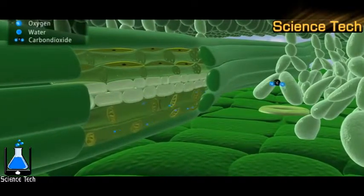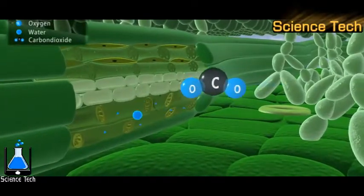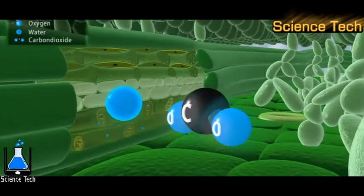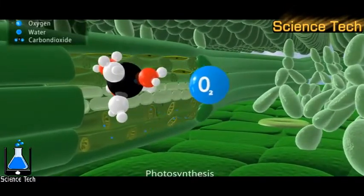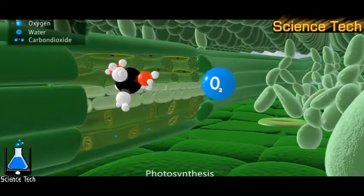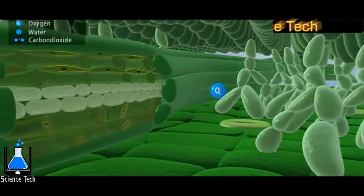Leaves make use of water and carbon dioxide for photosynthesis. Glucose formed during photosynthesis is transported to the other parts of the body through phloem cells.